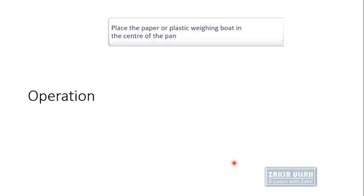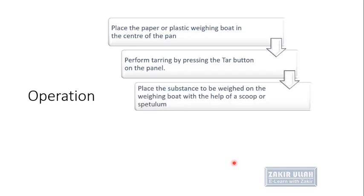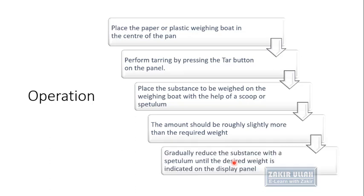To operate an electrical or electronic balance: first place a paper or plastic weighing board in the center of the pan, then press the tare button on the panel to zero the balance, which calibrates it. Then place the substance to be weighed on the weighing board using a scoop, spoon, or spatula — the amount should be slightly more than the required weight. Then gradually reduce the extra mass using the spatula or spoon until the required mass is shown on the display panel.